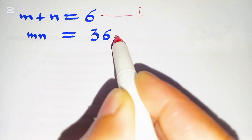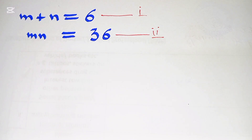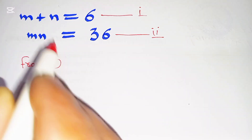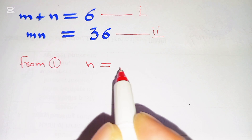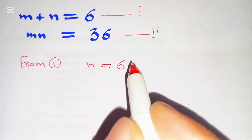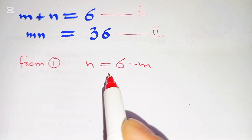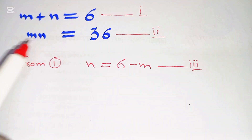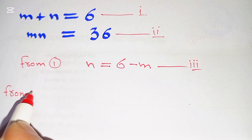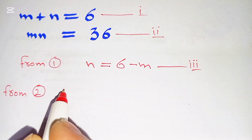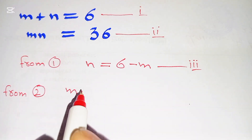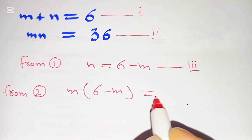This is equation number 1 and equation number 2. From equation 1, n is equal to 6 minus m. We move m to the other side to get equation number 3: n equals 6 minus m.